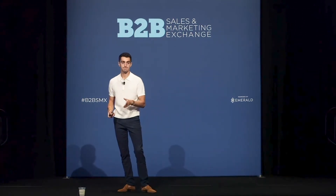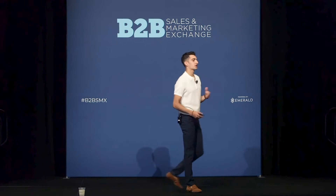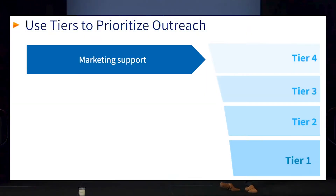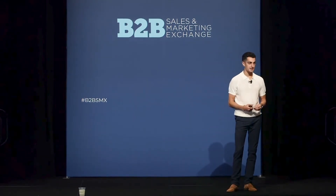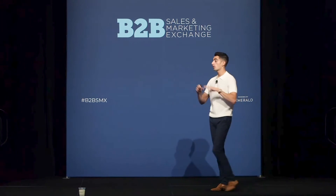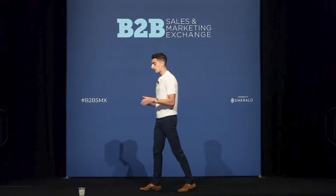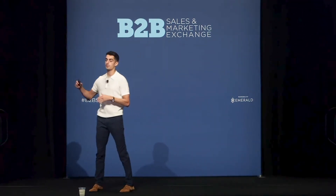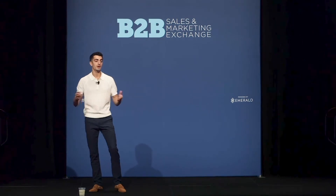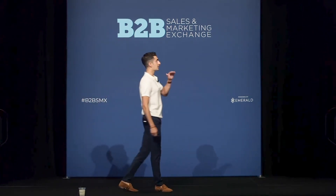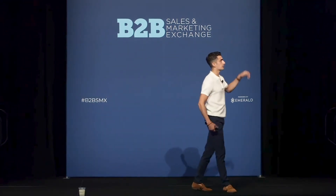Our tier four accounts — as a salesperson we're really not focusing too much on them. This is where we're working with marketing and have some marketing support to get them more sales ready. Personally, I don't like to use automation like automated cadences in Outreach or SalesLoft, but if your organization does, your tier four accounts would be a pretty good option to put in an automated cadence. We want to spend as little time as possible on our tier four accounts.